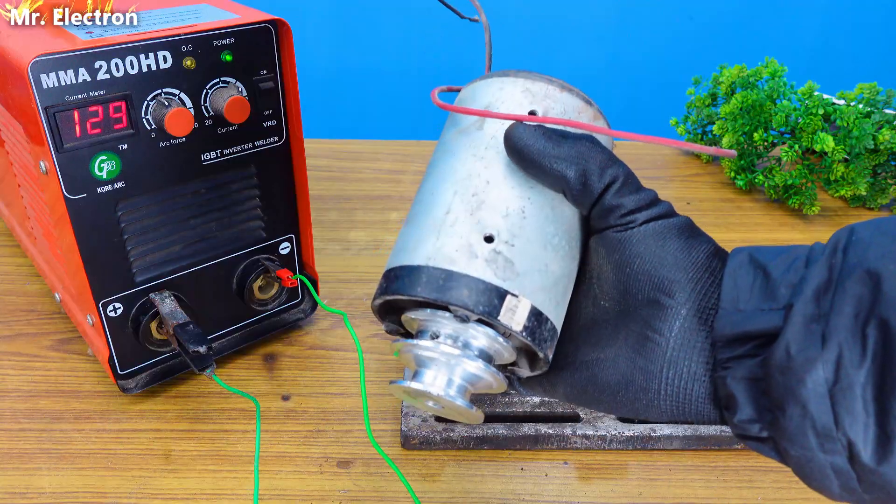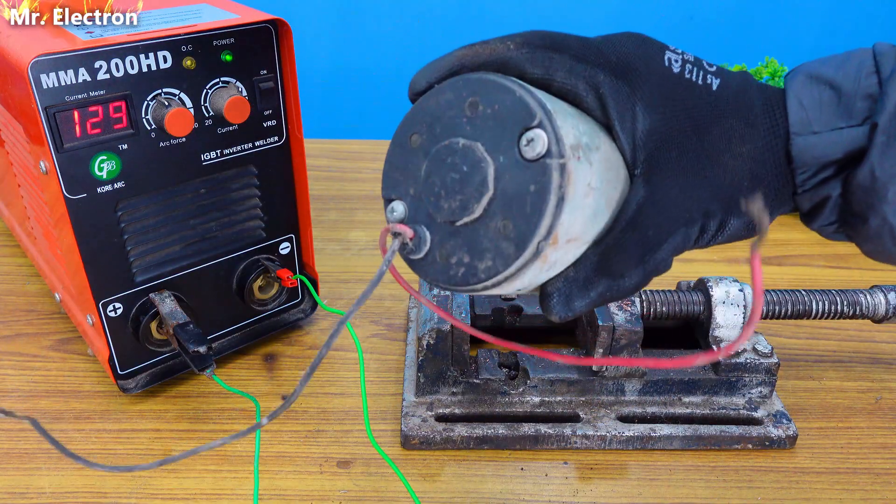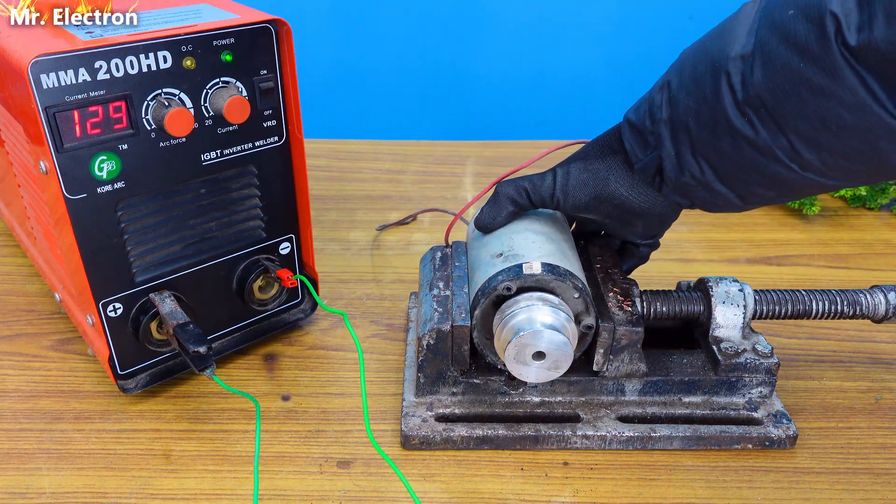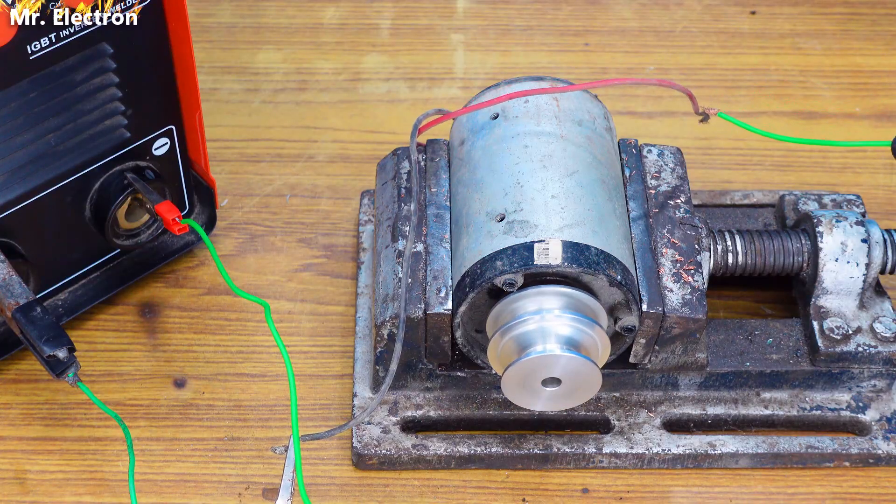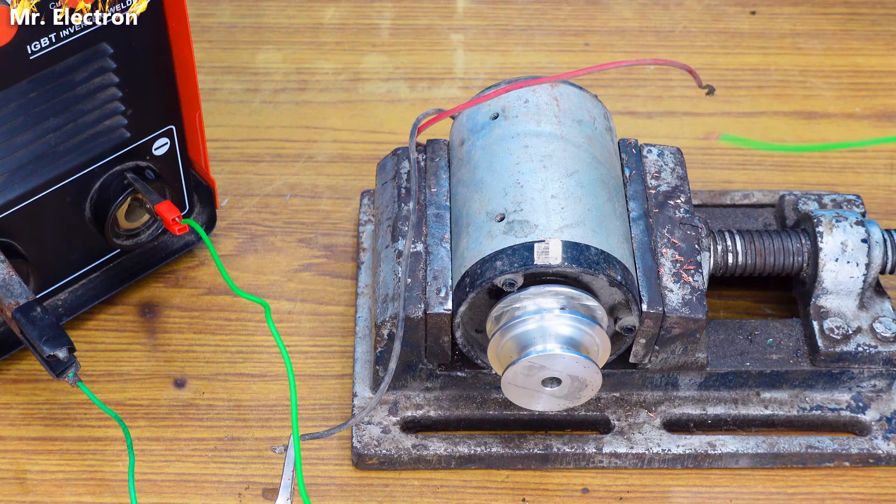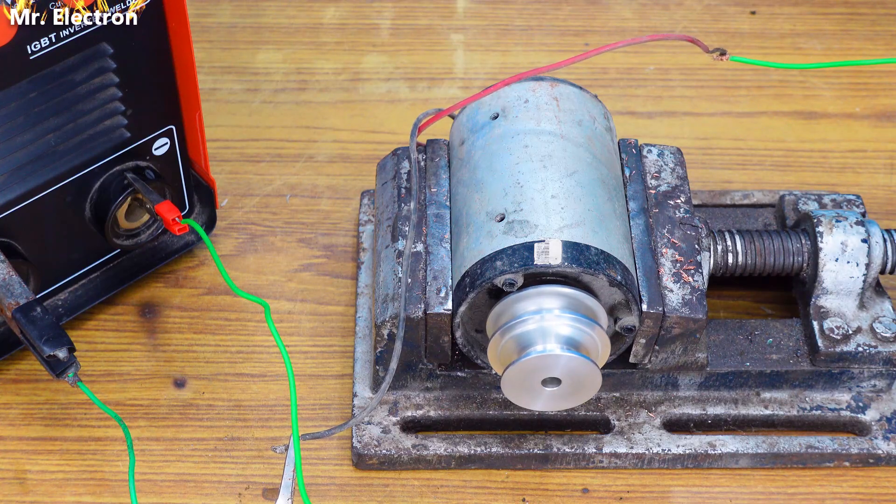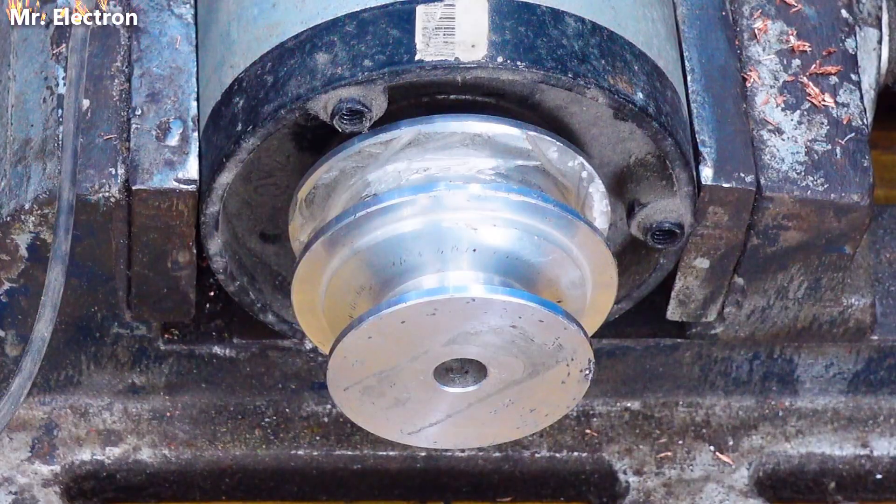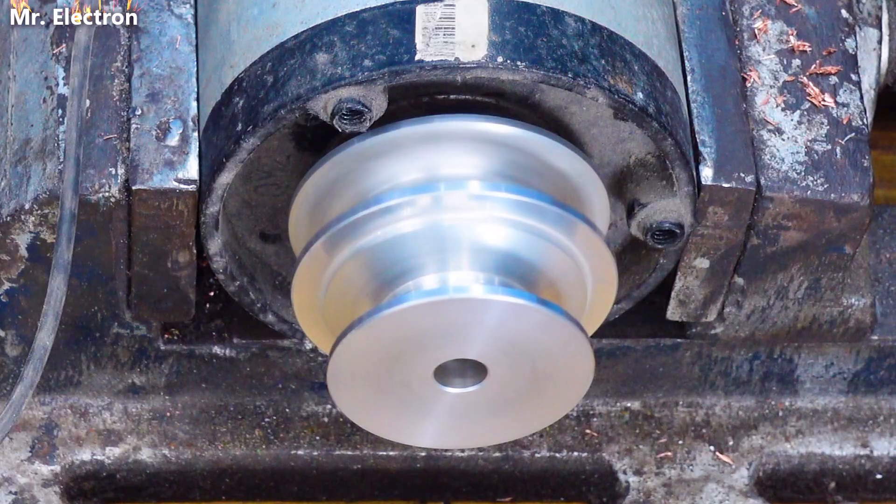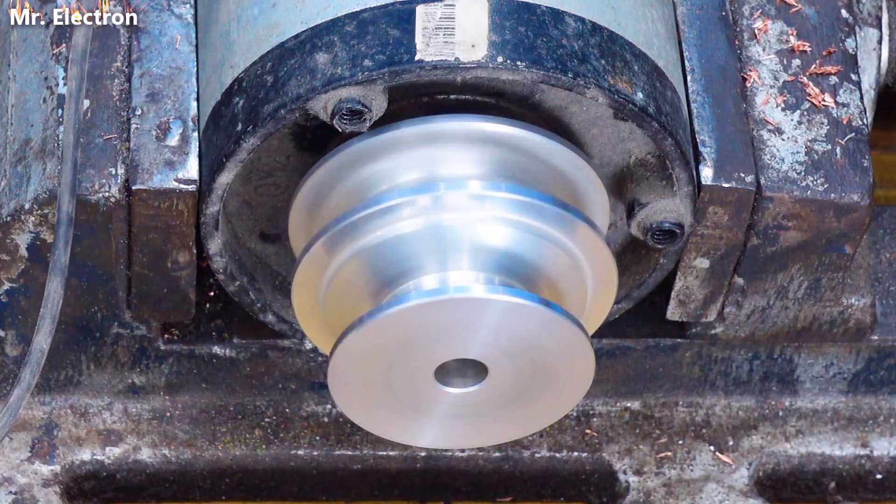Now this is our 24 volts RO pump motor and this is also running perfectly. I've placed this pulley and here you have the close-up. The motor is 24 volts, designed to run for very long durations, and it is running quite good.